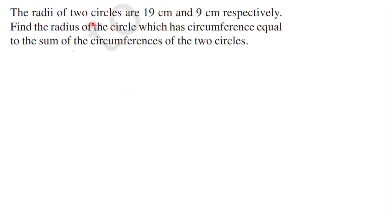The radii of two circles are 19 centimeters and 9 centimeters respectively. Find the radius of the circle which has circumference equal to the sum of the circumferences of the two circles.